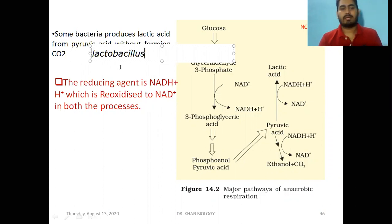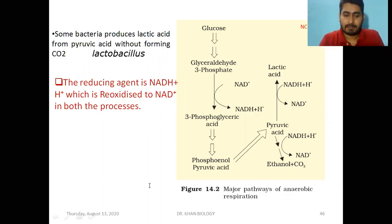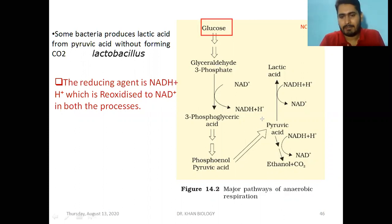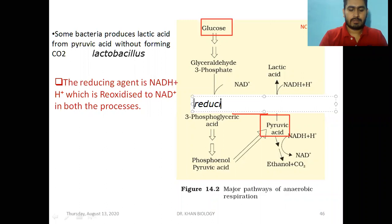Lactobacillus is a gram-positive rod-shaped bacteria that produces lactic acid. Now a very important concept: when glucose goes into glycolysis and pyruvic acid is produced, an important product called NADH+H⁺ is also formed — this is the reducing power.